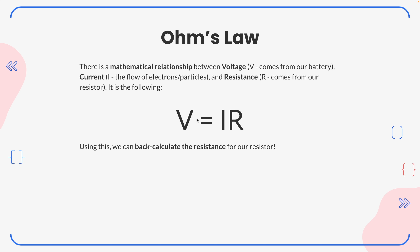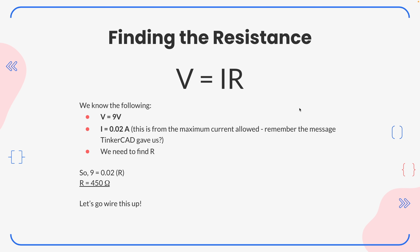Ohm's Law is the equation V = IR. We know V equals 9 volts because our battery is 9 volts. We know I is 20 milliamps — the maximum the LED can tolerate. We don't know R yet, but we can solve for it by dividing both sides by I, giving R = V / I. So: V = 9 volts, I = 0.02 amps (converted from 20 mA). Dividing: 9 divided by 0.02 equals 450. Our resistor needs to be 450 ohms.